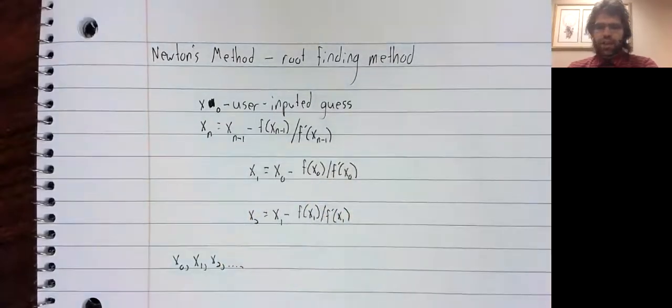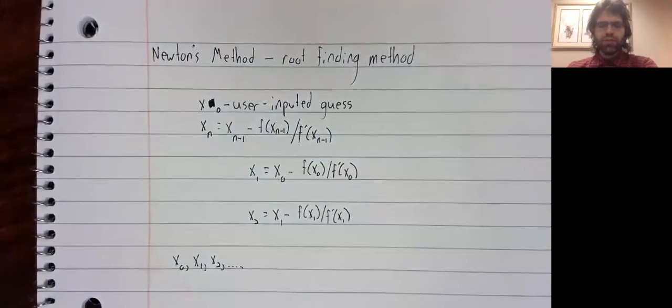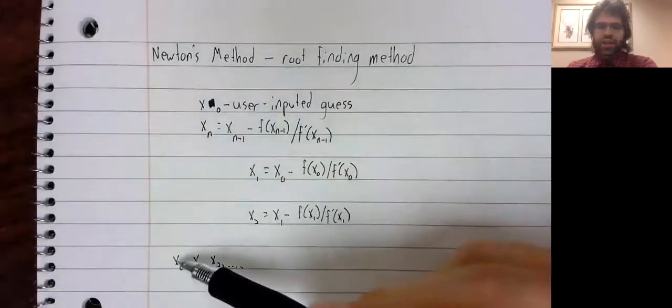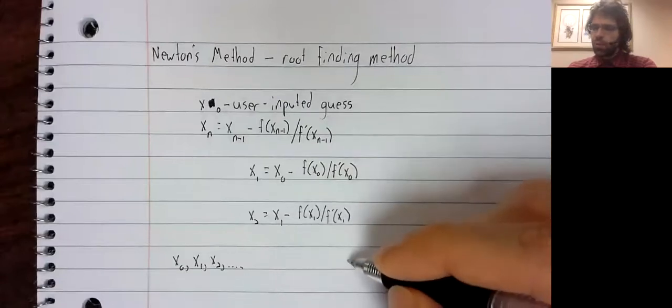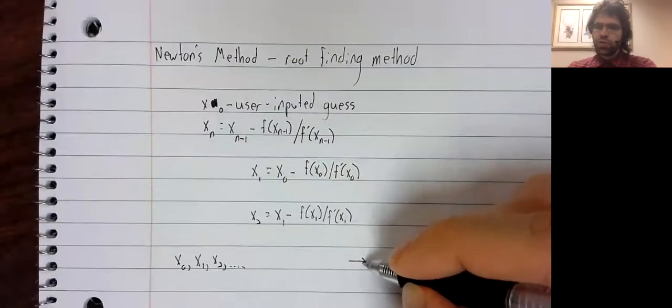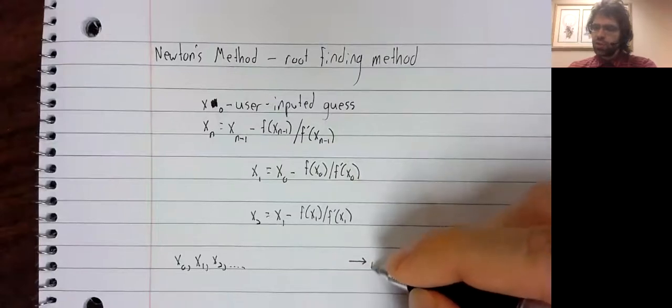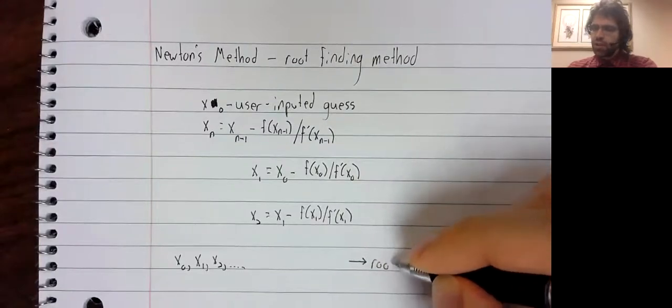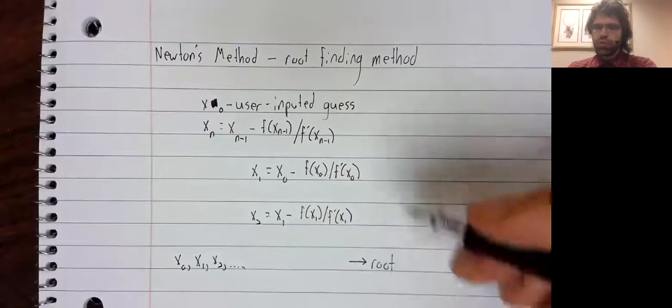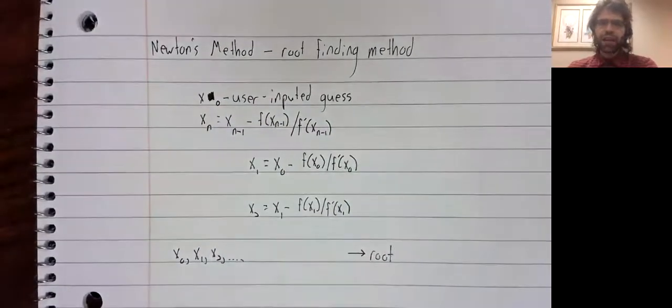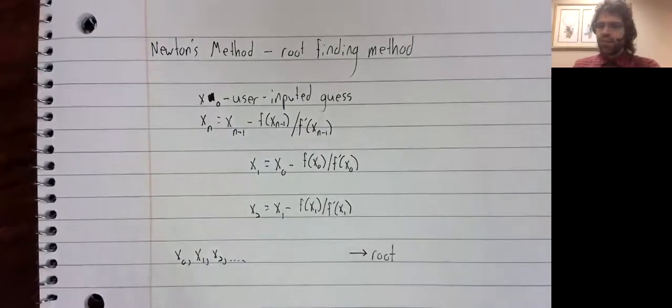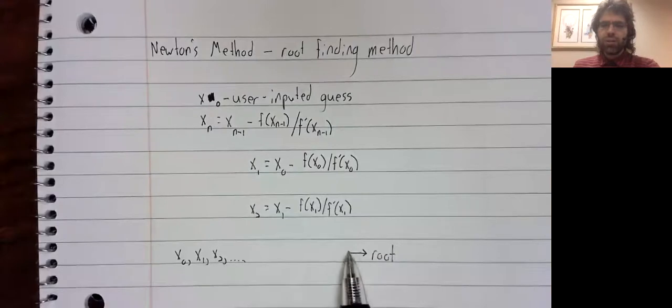And the idea of Newton's method is that as we go down this list, the numbers get closer and closer to our root of this function f of x. So we have the idea of a sequence approaching a number.